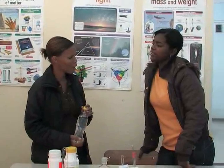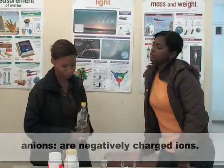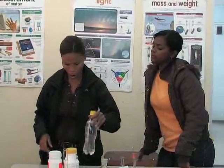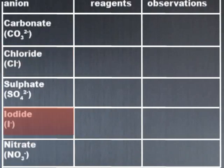What are N-ions? N-ions are negatively charged ions. We are going to test for carbonate ions, chloride ions, nitrate ions, iodide ions, and sulfate ions. Get your record book ready for tests, reagents, and observations.